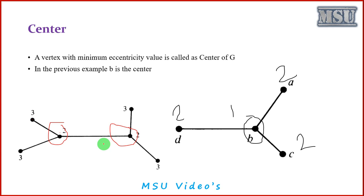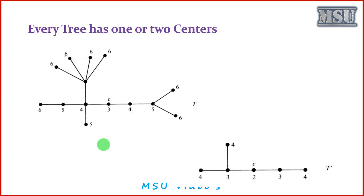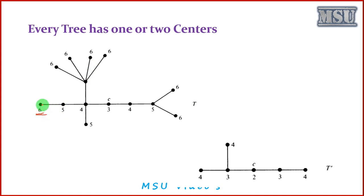If a graph contains two centers, then it is called a bicenter. Now here is an important theorem: every tree has one or two centers. Consider this graph — it is a tree — and we are identifying the eccentricity value of every vertex. The numbers shown here indicate eccentricity values, not vertex numbers.